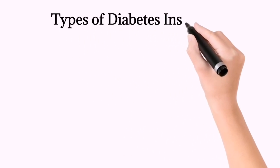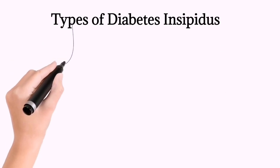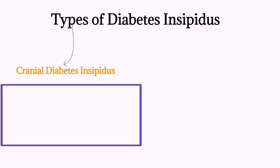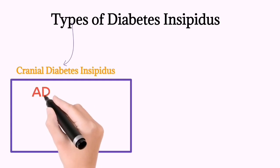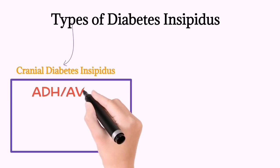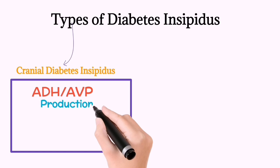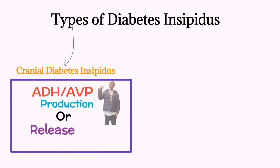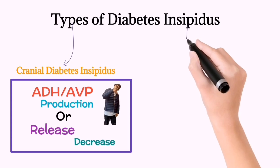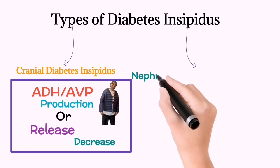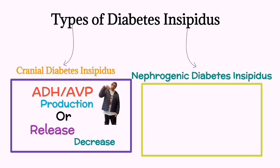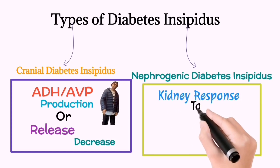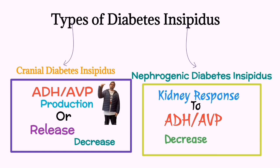Let's come to the types of diabetes insipidus. First is cranial diabetes insipidus, which is primarily caused by decreased production or release of ADH or AVP hormones from the hypothalamus or pituitary gland. The second type is nephrogenic diabetes insipidus. In this type, the kidney response to ADH or AVP becomes decreased.